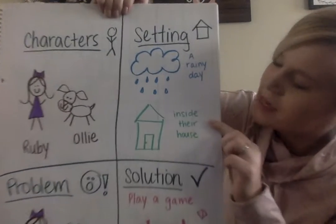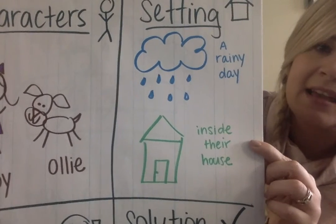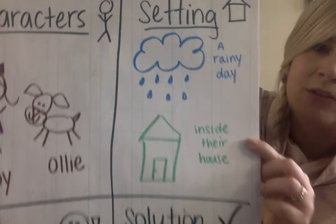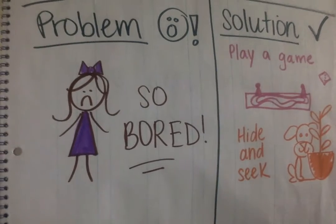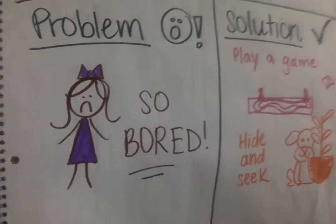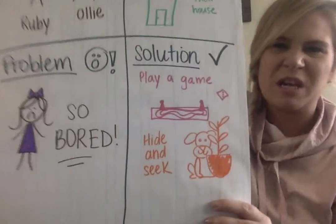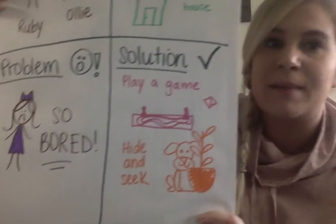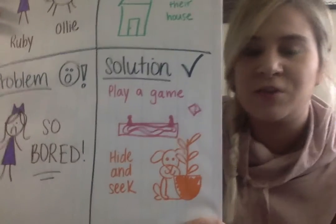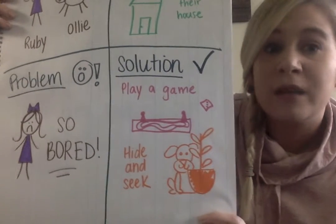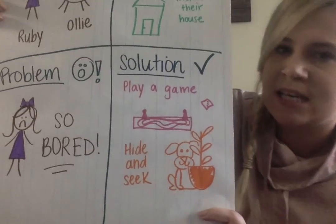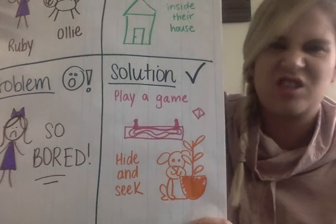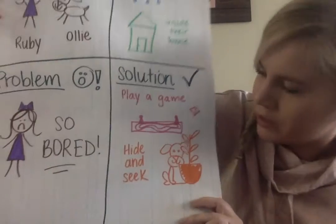My setting this time is a rainy day inside their house, and my problem is that because it's a rainy day, they are so bored — there's nothing to do. I started thinking of a couple of solutions, because really good writers want to slow down the story and make it suspenseful so the reader keeps asking what's going to happen next. We don't want to solve our problem right away — that would be way boring.